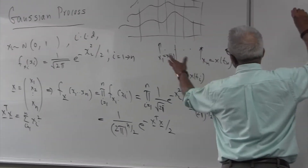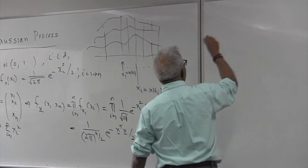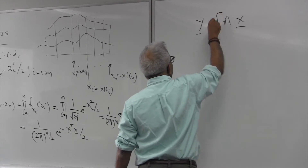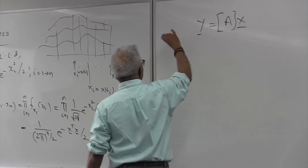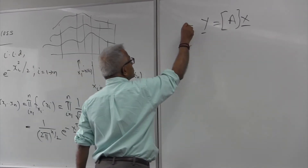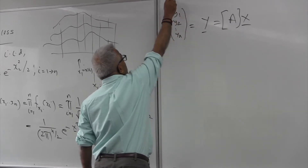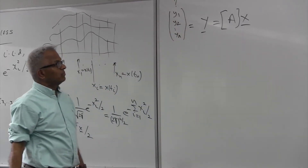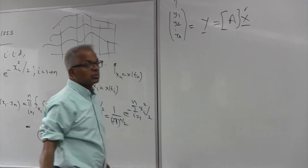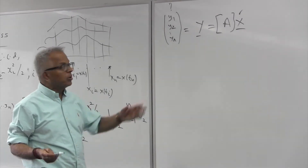Now, what I want to do is bring in dependence among the random variables. I'll use a linear transformation: y = Ax, where A is a matrix. So y1, y2, yn are linearly related to x. We want to find the density function of the y vector, and we know the density function of x from what we just derived.